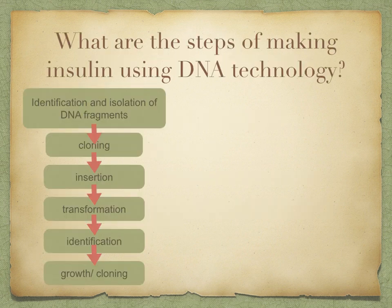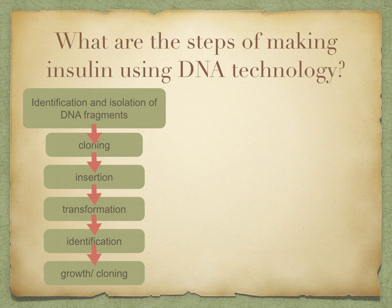In the last two lessons, we discussed how to identify and isolate DNA fragments, and then to clone the DNA using a polymerase chain reaction. Today, we're going to look at how to insert the gene into a vector, and then once this gene has been inserted into a vector, it's going to be put into host cells in a process called transformation. Then we're going to identify which host cells have taken up the gene, and finally, we're going to look at how to grow up those host cells.